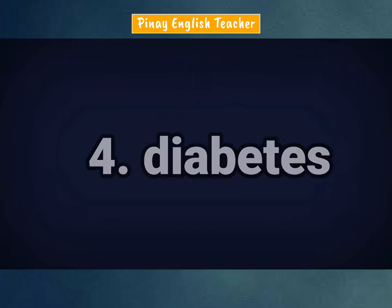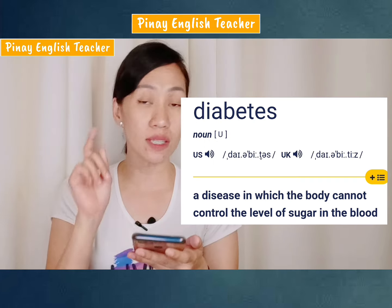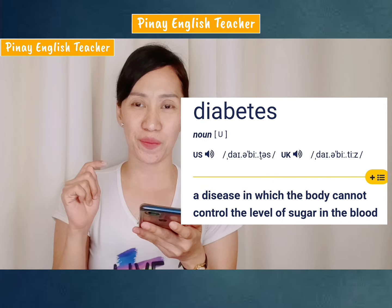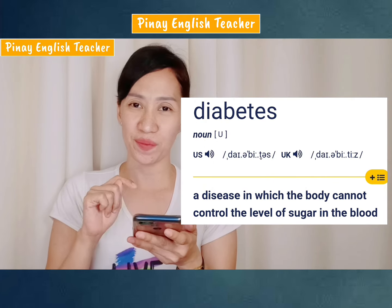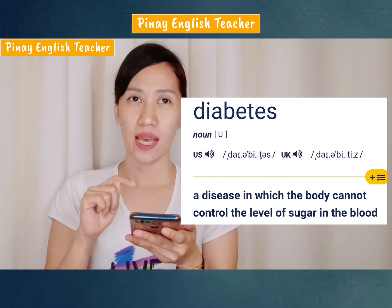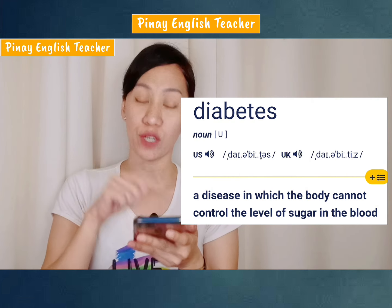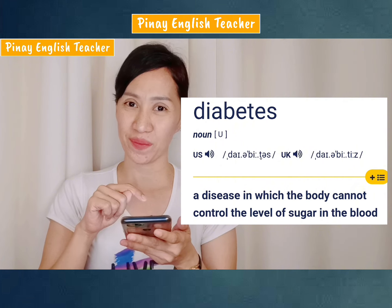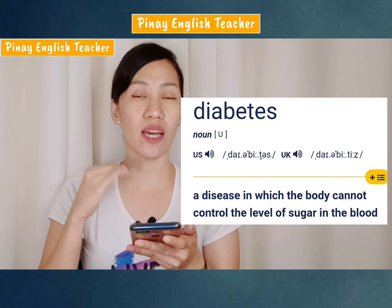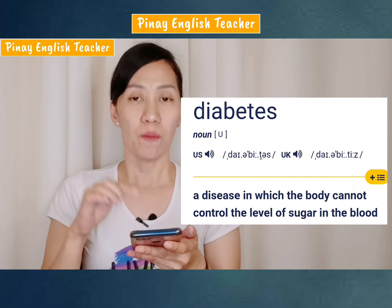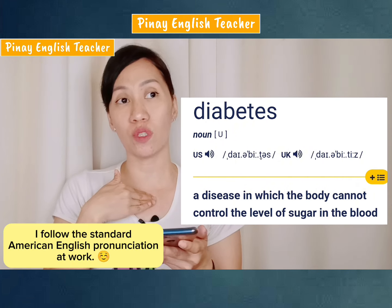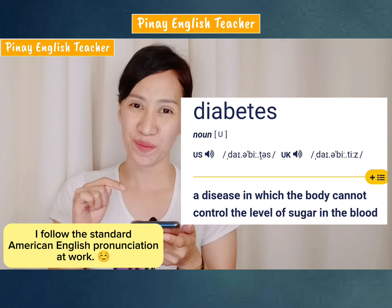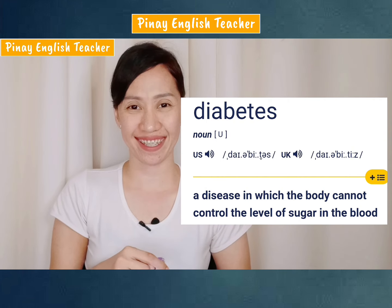Number four. Let's listen to how it is pronounced in American English: diabetes. It's diabetes. In British English: diabetes. I use American English, so this is diabetes.